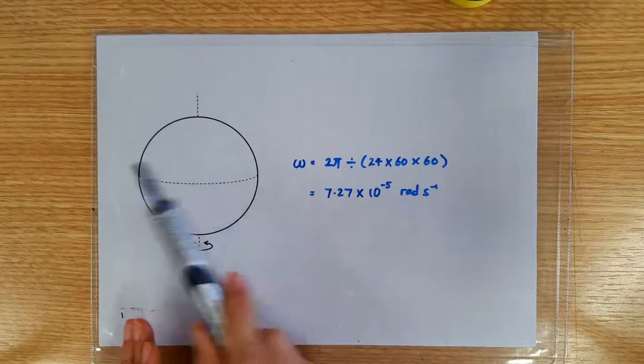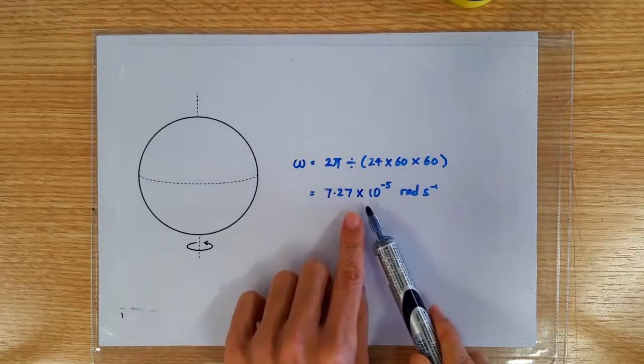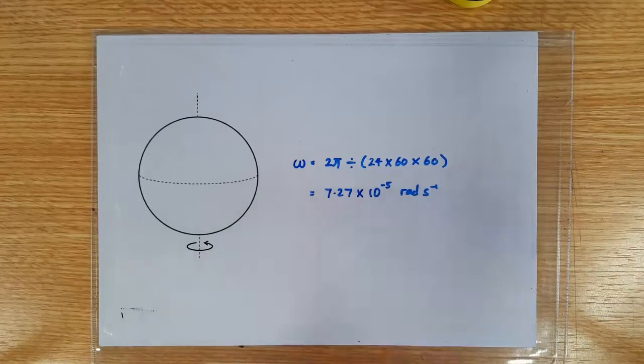So the Earth is rotating at the rate of 7.27 times 10 to the power of negative 5 radians per second.